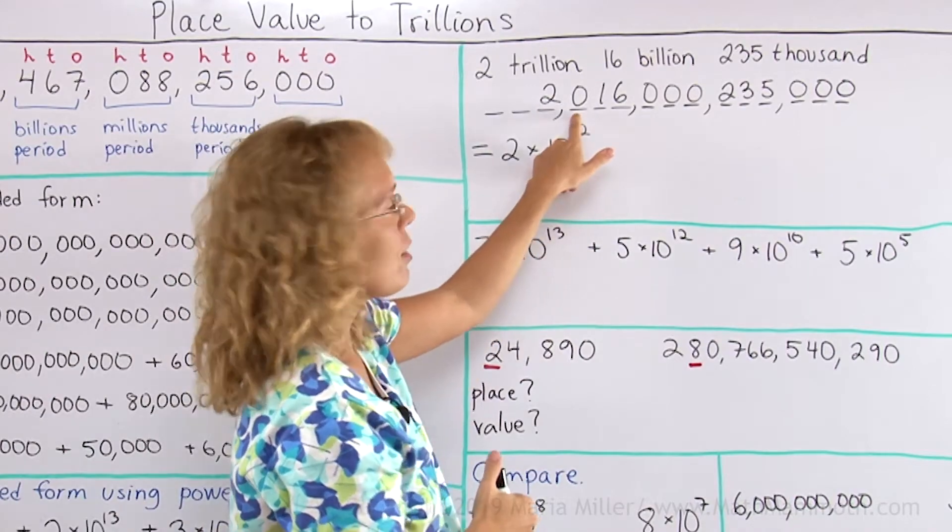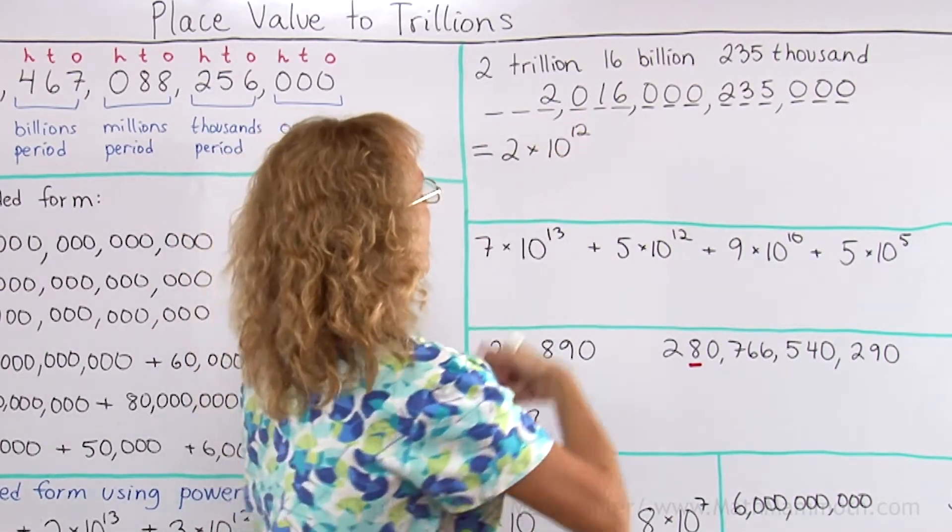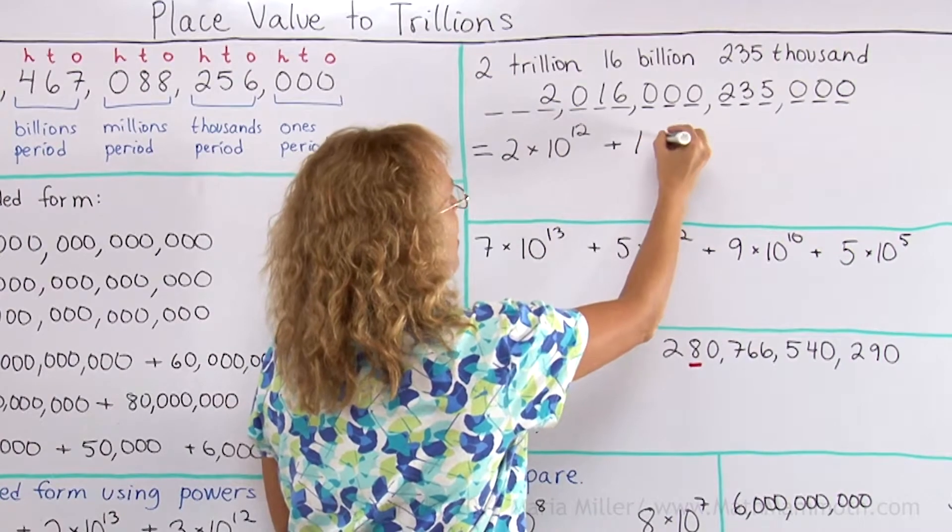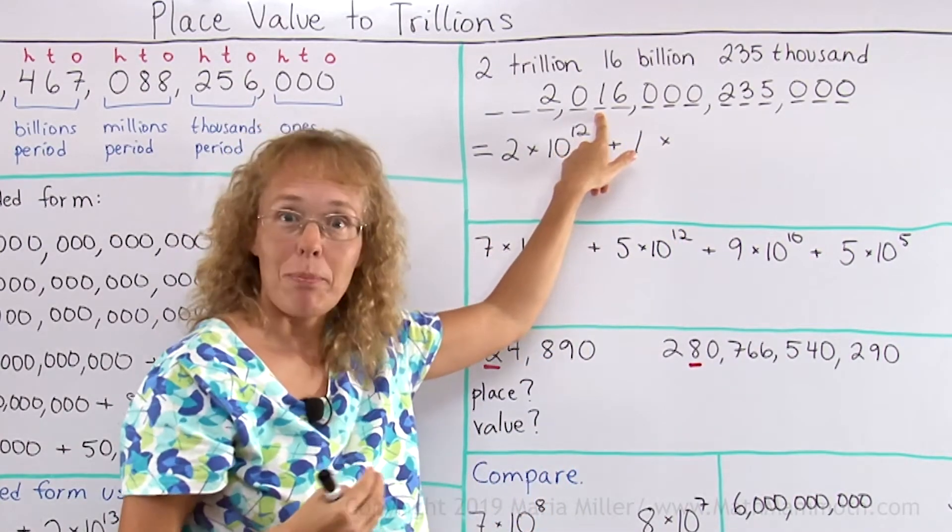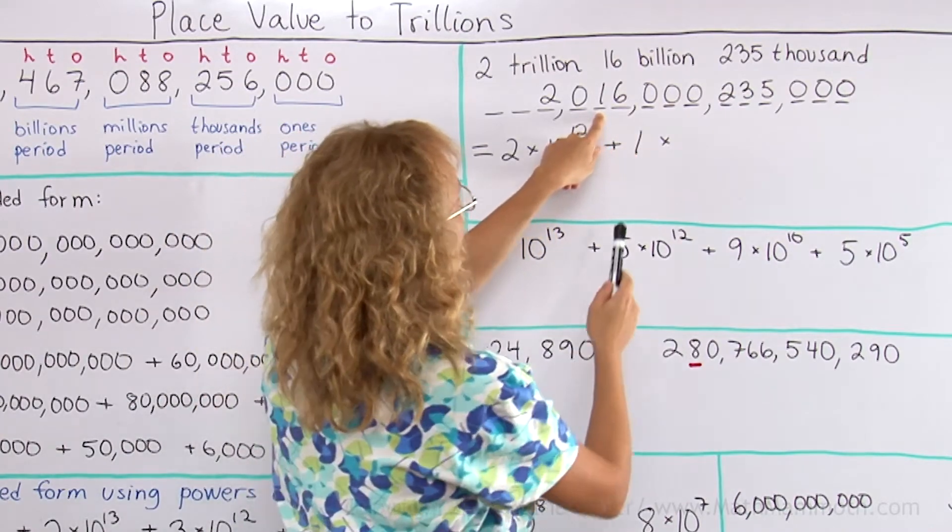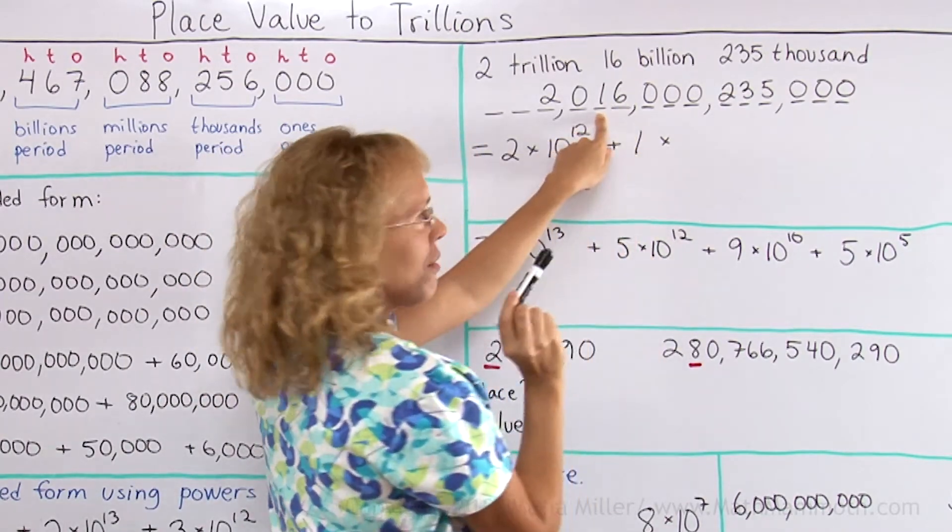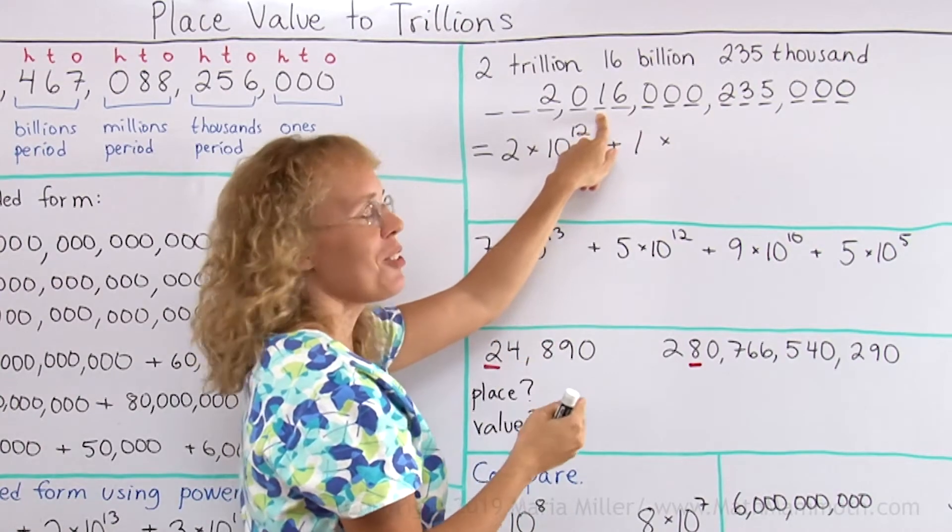Then there's 0, so I can skip that. Then this 1 here, plus 1 times—this 1 here is in the 10 billions place. And if I imagine that I had 1 of them, I had 1 ten billion, or 10 billion,